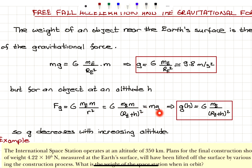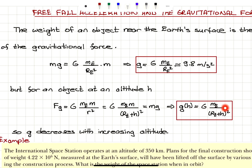So if this equals the weight of the object at altitude h, the free fall gravitational acceleration g is a function of h, given by capital G times the mass of the Earth divided by the quantity (radius of the Earth plus the height h), squared.